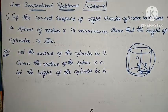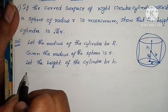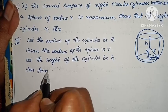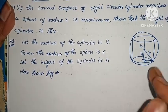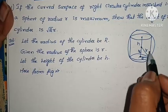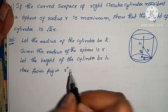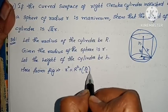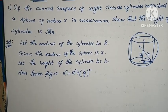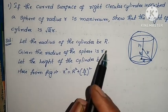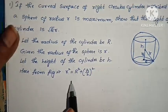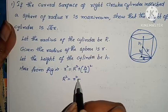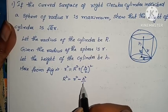The radius of the cylinder and the sphere form a right-angle triangle. From the figure, by Pythagoras theorem: hypotenuse square equals sum of squares of other two sides. So small r² = capital R² + (H/2)², which gives capital R² = small r² minus H² by 4.